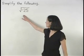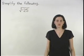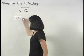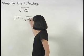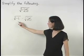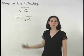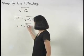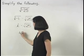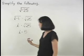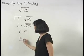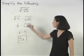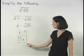To simplify the square root of negative 25, think of it as the square root of negative 1 times the square root of 25. Remember that the square root of negative 1 can be represented by the imaginary number i. So we have i times the square root of 25, or i times 5, which can be rewritten as 5i. So the square root of negative 25 simplifies to 5i.